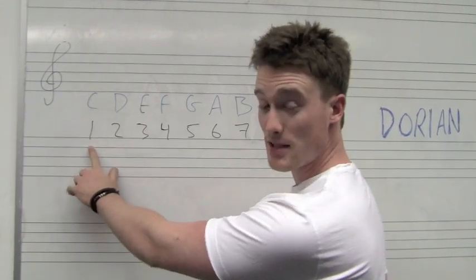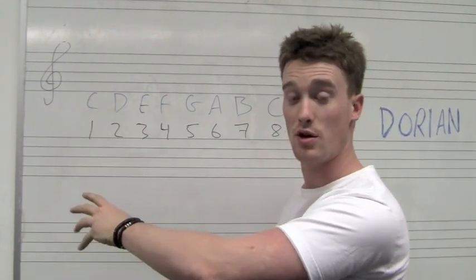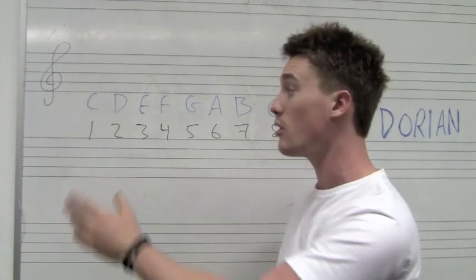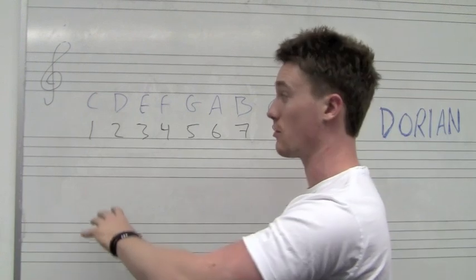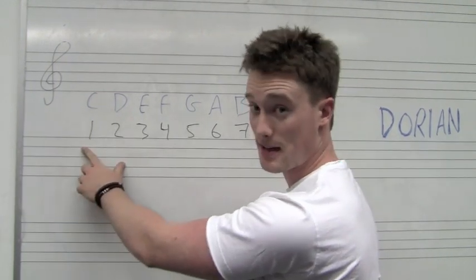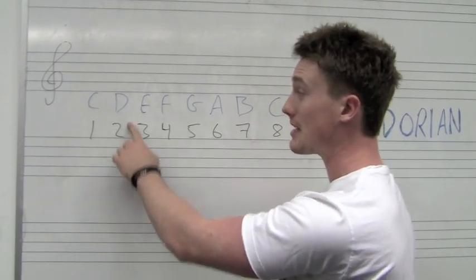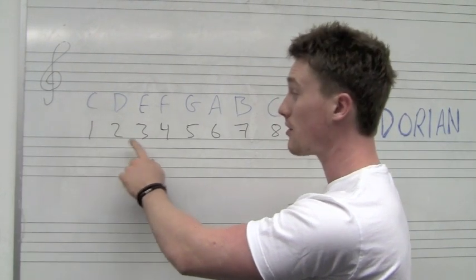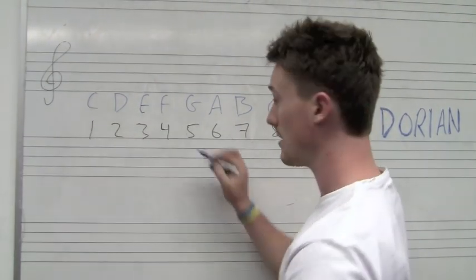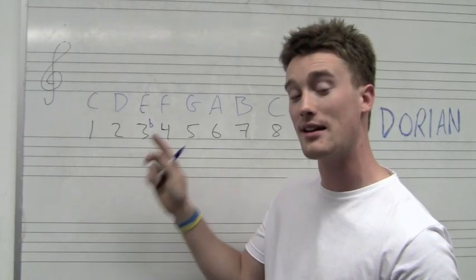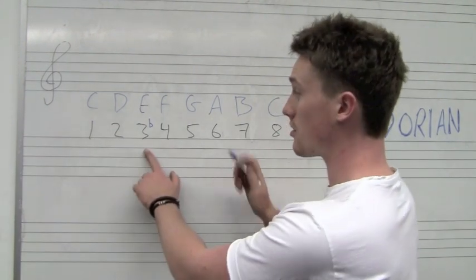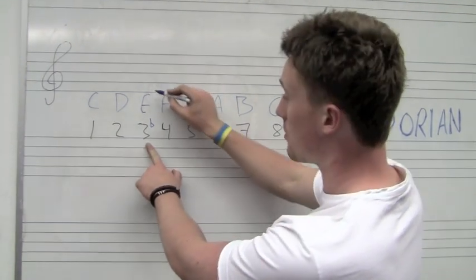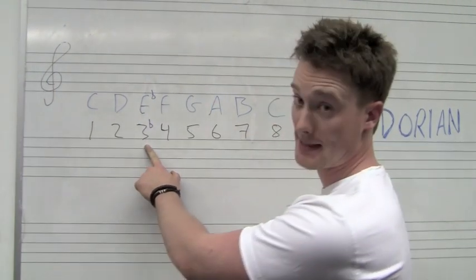So you start off with C because we want a C Dorian mode — if we wanted an A Dorian mode, we'd write an A major scale and change it, but today we're working out a C Dorian mode. So we start off with C, that's exactly the same. The second degree D, that's exactly the same. The third is flattened — the third would go down a semitone, or down a fret on a guitar, or down a key on a keyboard. So E goes down a semitone and E becomes E flat.